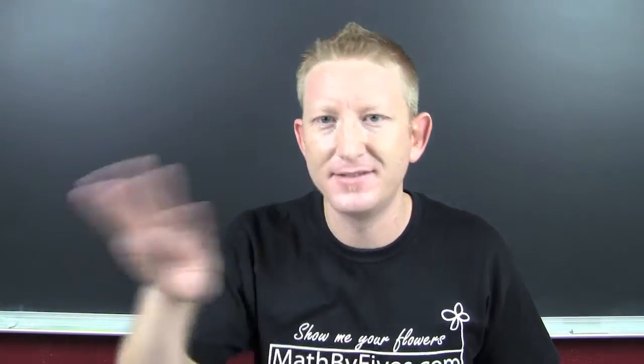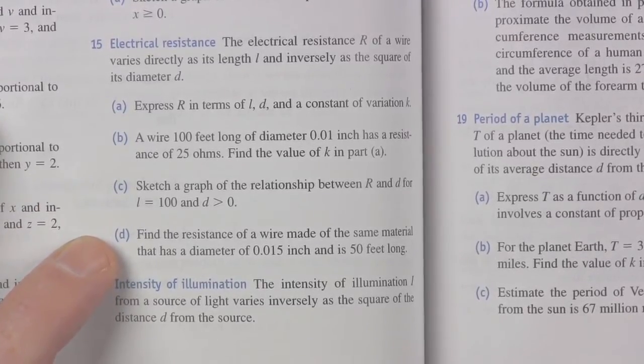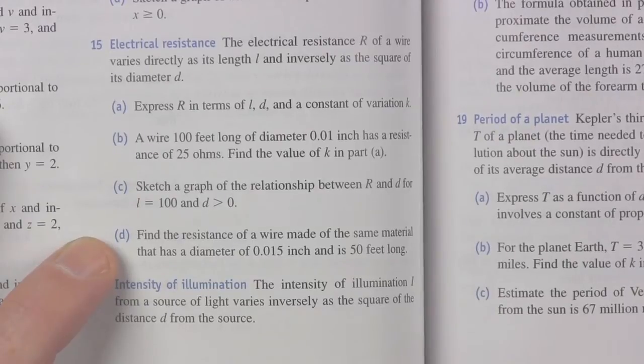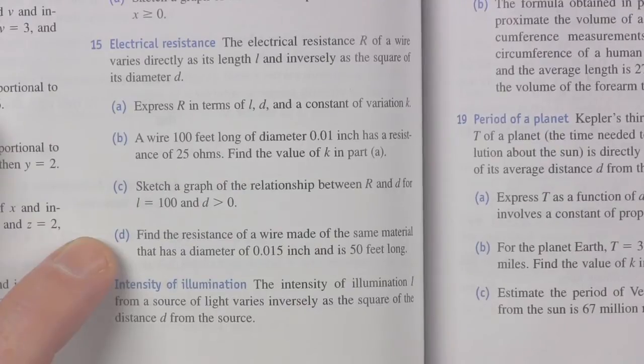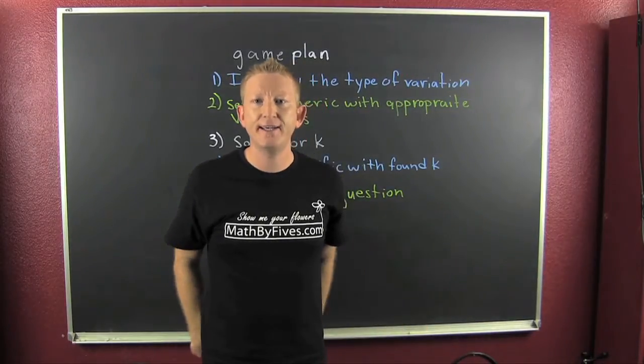They want you to sketch the graph. Ah, skipping. Find the resistance of a wire that is made of the same material that has diameter of 0.015 inch and is 50 feet long. Let's do the math! What's our game plan? We have a game plan!